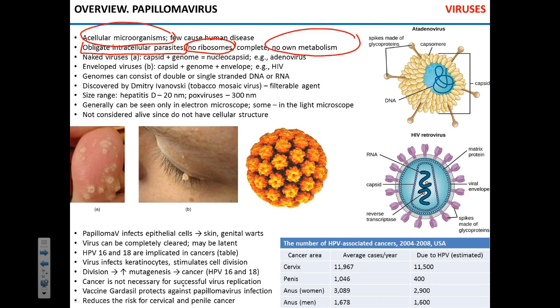Obligate intracellular parasites — 'obligate' means they must be inside a cell; viruses take energy from the cell and use cellular energy for their growth. Now, there are benign viruses that don't do any cellular damage. For instance, every single person in that room is infected with anello viruses — in fact, every person in the world is. They replicate; we don't even know where. They don't do anything, as far as we know.